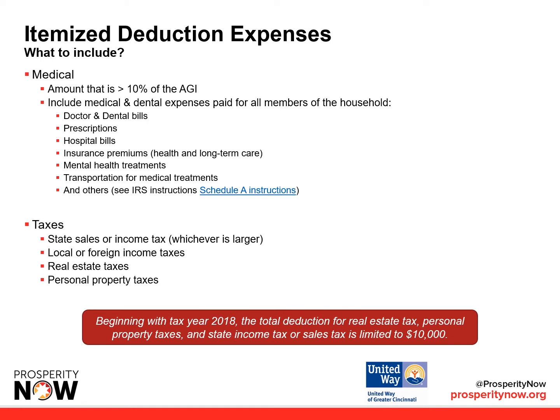What do we include in itemized deductions? For medical expenses, that's an amount greater than 10% of the AGI, and this includes all medical and dental expenses paid for members of the household. That includes doctor and dental bills, prescriptions, hospital bills, insurance premiums, mental health treatments, transportation for medical treatments, and others. See Schedule A instructions for more.